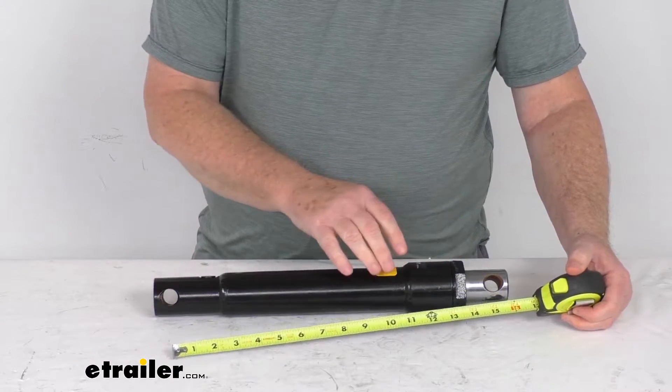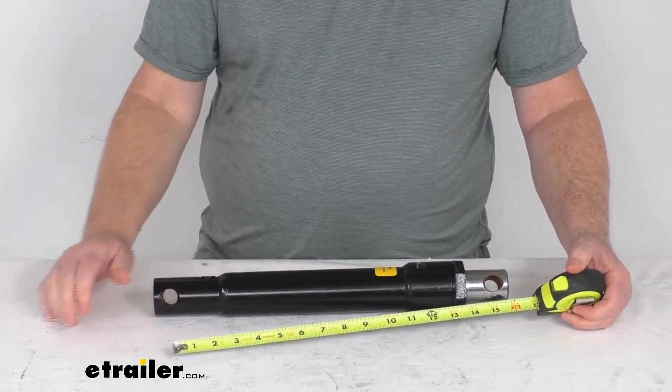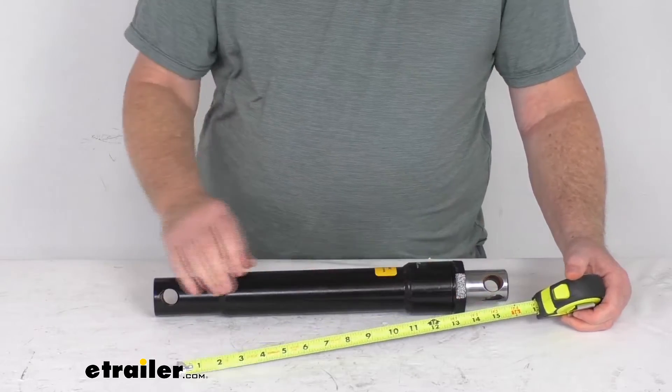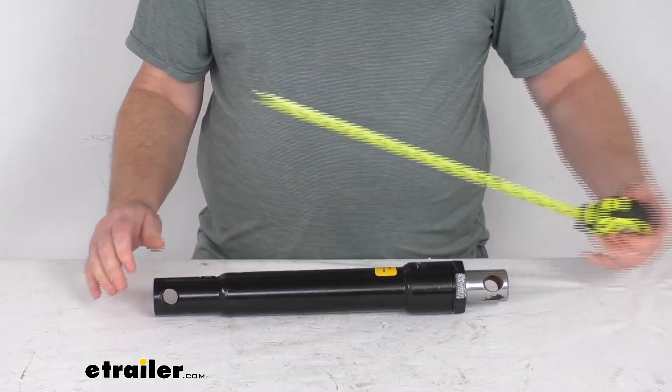I mentioned the 8-inch stroke, so the extended length on this will make it 23 and 1/4 inches from pinhole to pinhole when this cylinder is extended out.